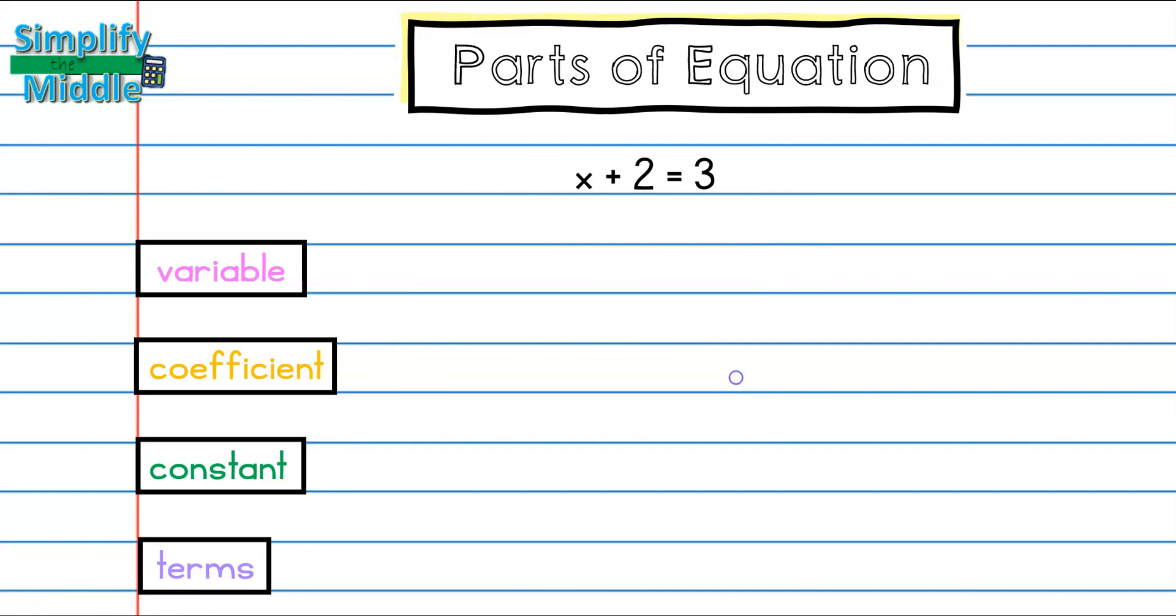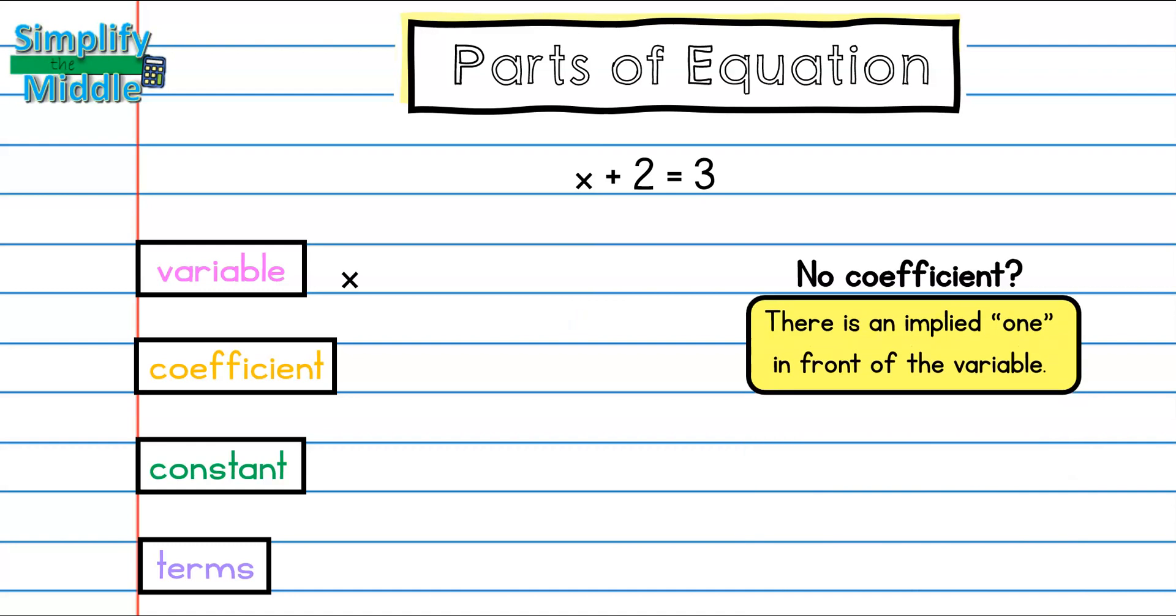Let's do another example. Here I have x plus 2 equals 3. Well the variable is just x, and now I'm looking for my coefficient. I notice there's no number in front of the variable. Does that mean there's no coefficient? Well there is actually an implied 1 in front of each variable, which means even though you can't see it, it's there.